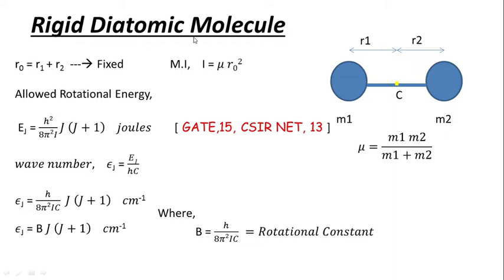The first topic is the rigid diatomic molecule. We have a diatomic molecule containing two atoms, and it is rigid, meaning the bond length R₀ = R₁ + R₂ is fixed. The moment of inertia is given by I = μR₀², where μ is the reduced mass given by M₁M₂/(M₁+M₂). The allowed rotational energy is Eⱼ = h²/(8π²I) · J(J+1) Joules.